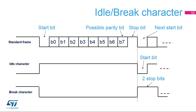This slide shows an example of eight bits data frames configured with one stop bit. An idle character is interpreted as an entire frame of ones — the number of ones will include the number of stop bits. A break character is interpreted on receiving zero for a frame period. At the end of the break frame, two stop bits are inserted.